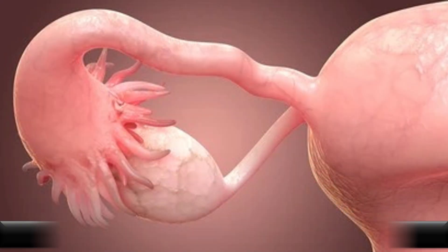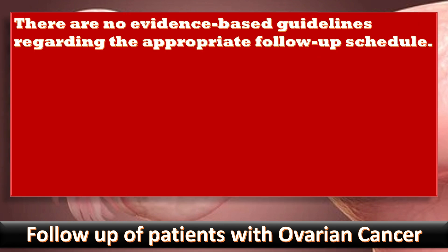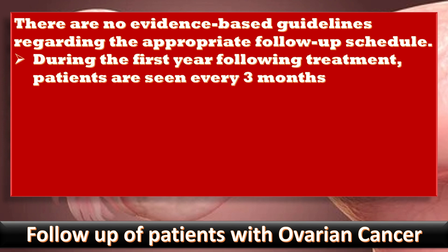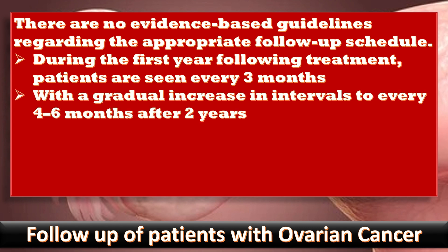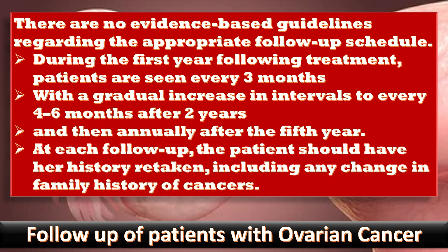Regarding follow-up, there are no evidence-based guidelines on the appropriate follow-up schedule. During the first year following treatment, patients are seen every three months, with a gradual increase in interval to every four to six months after two years, and then annually after the fifth year. This follow-up schedule is from the FIGO 2021 Ovarian Cancer Guidelines. At each follow-up, the patient should have her history retaken, including any change in family history of cancers.